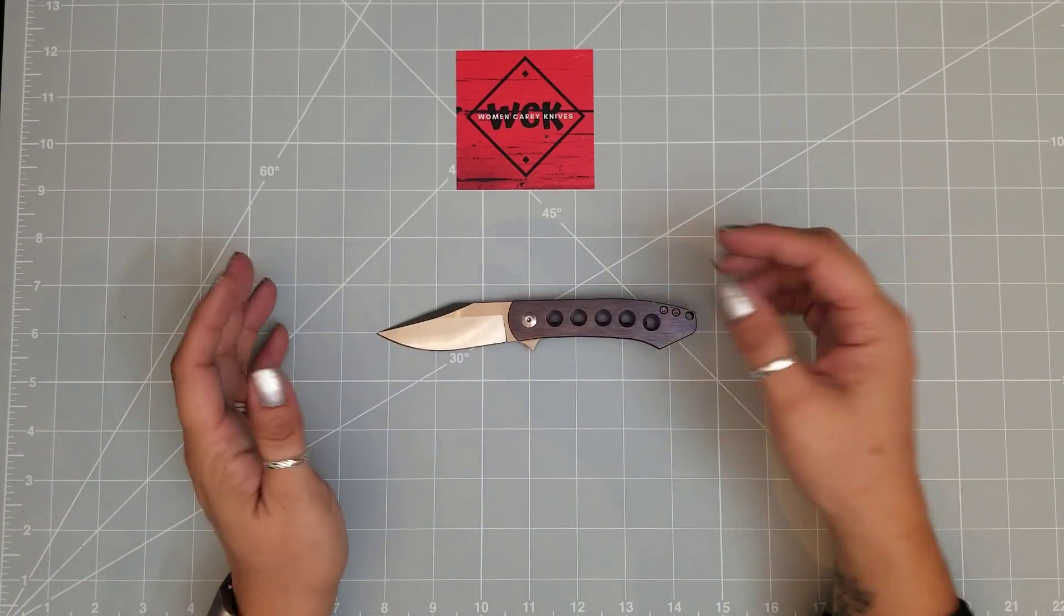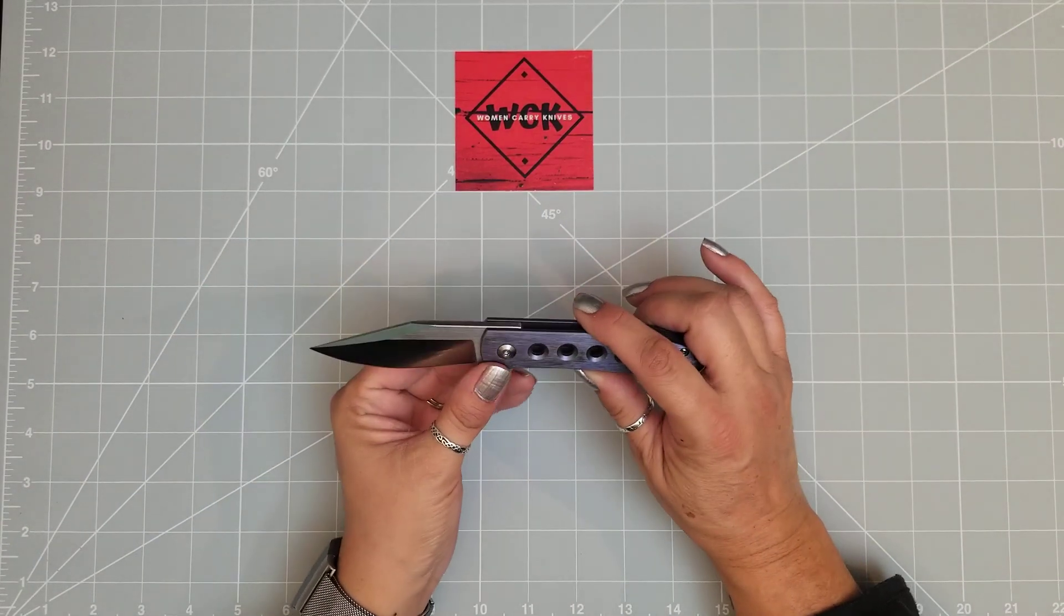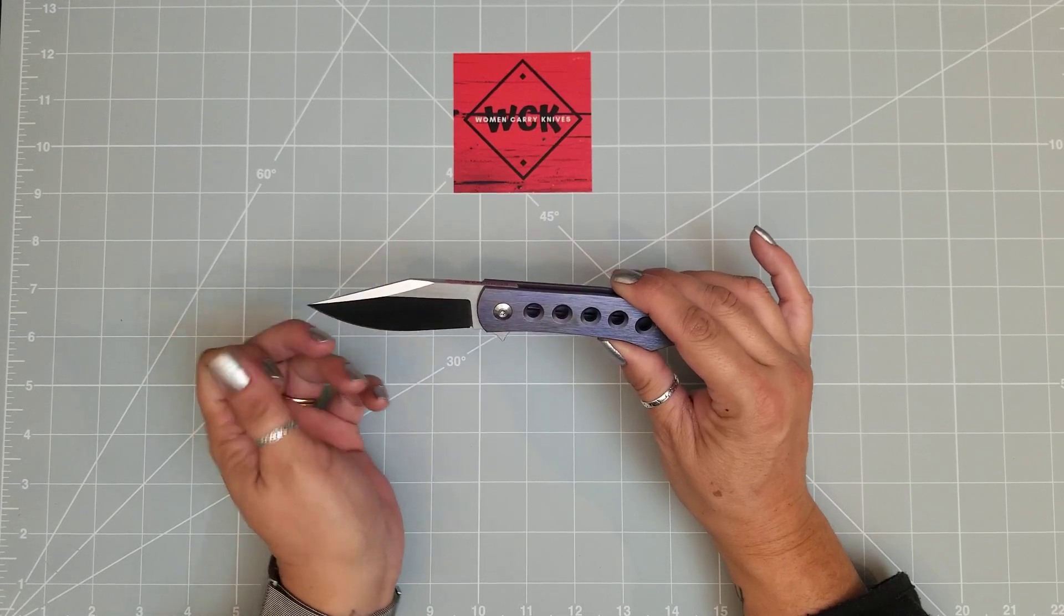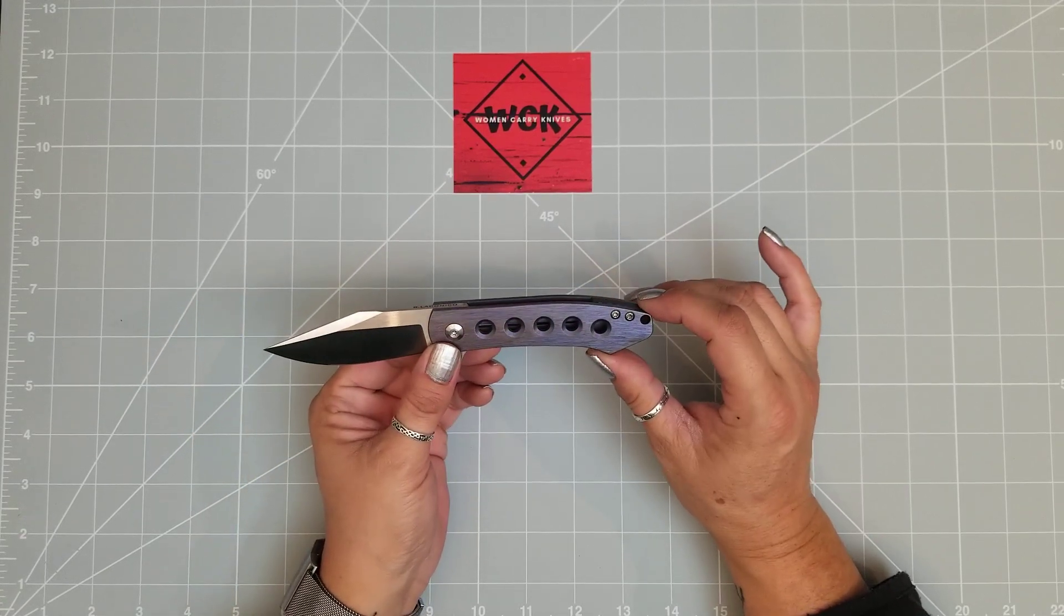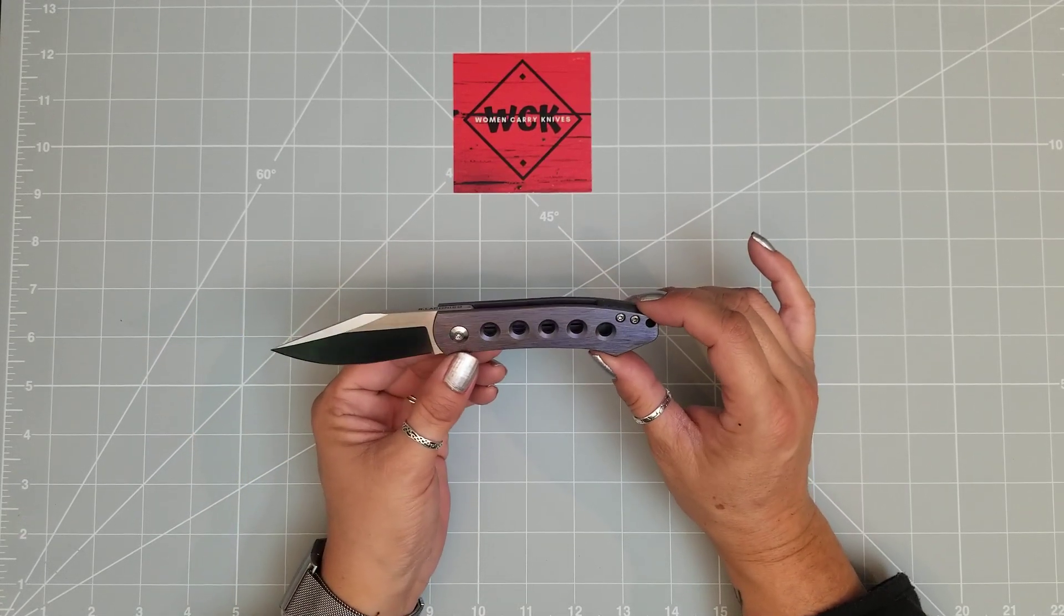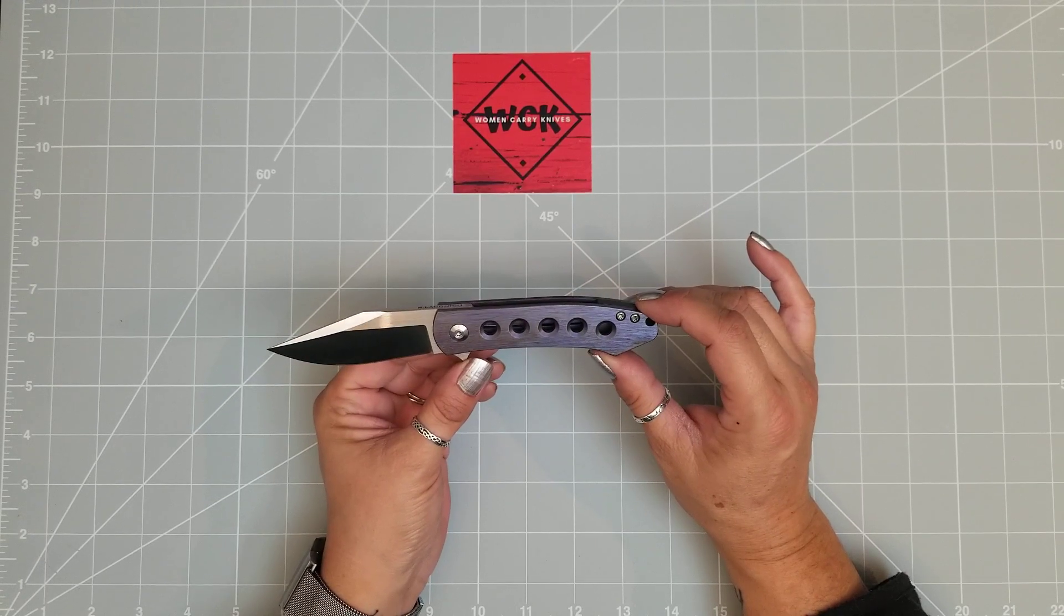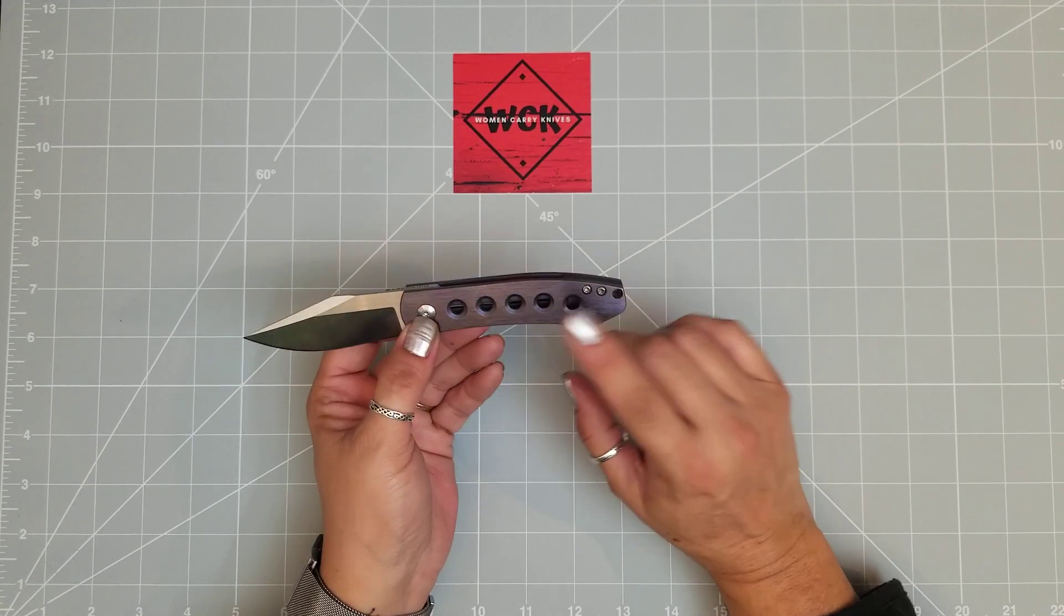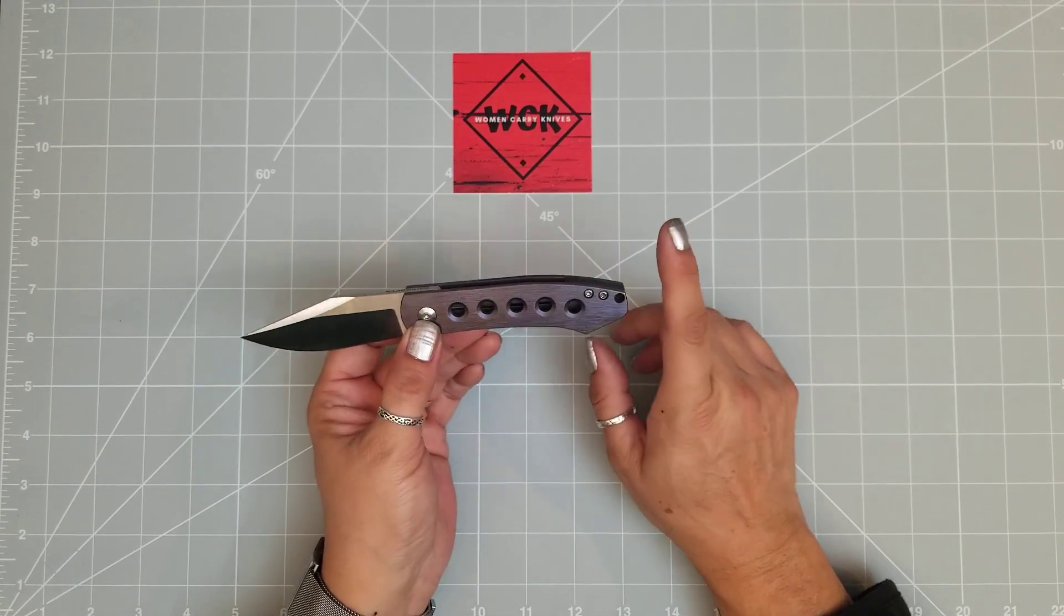This is a Ray Laconico design. For those of you that saw before, this is one that I actually picked up at Blade Show. I had been down to Carmel Cutlery, where Monterey Bay Knives is, and I originally saw this one in just the plain titanium, which I thought was a really cool knife. I need to get one of those sometime.